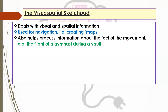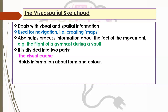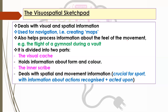So it's very different to information going to the phonological loop, which is auditory — hearing information goes to one side, visual and spatial to the other. It also has two key parts. The first is called the visual cache, which holds information about things like form and colour of what you're seeing. The more important part in a sporting sense is what we call the inner scribe, which deals with spatial and movement information — that's much more important than, for instance, the colour of something.